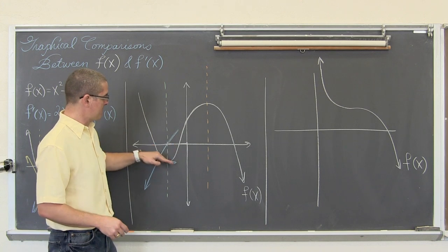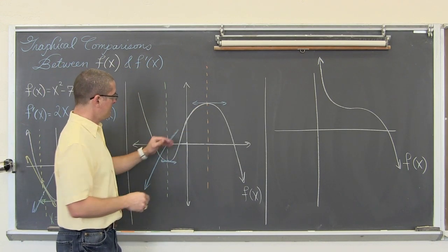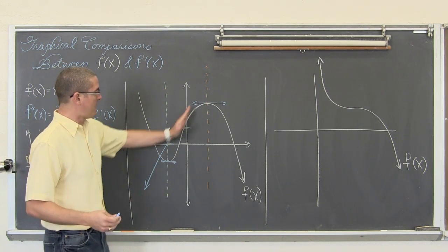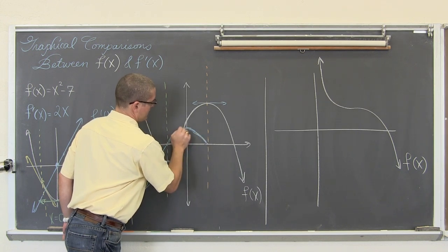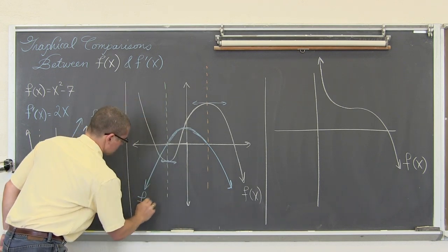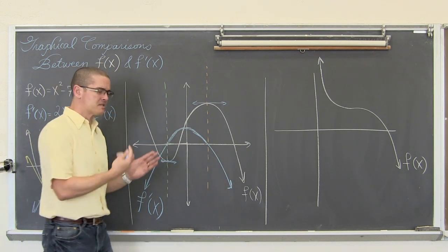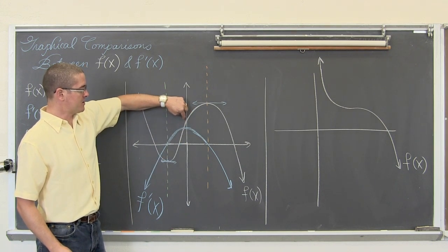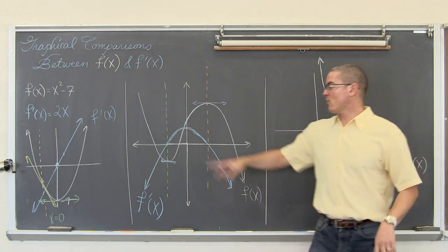Everywhere to the left of the relative minimum my slope is negative, and everywhere to the right my slope is positive. I don't know how high this derivative will go, but from this point on the graph is rising, so the derivative values must be positive — my sketch of the derivative has to be above the x-axis. The graph continues to rise until I get to this orange line, which is the relative maximum, and at that orange line the slope of the curve again becomes zero, so the derivative has a value of zero there.